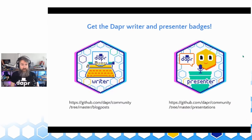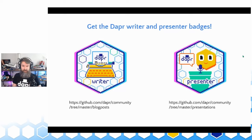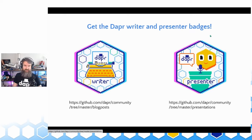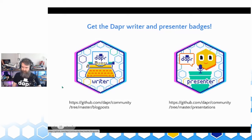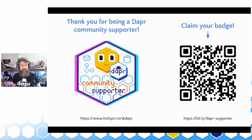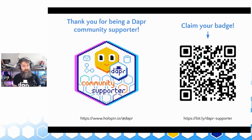If you are writing a Dapper blog post, recording Dapper-related videos, or giving sessions about Dapper, you can claim digital badges. Go to the links in the Dapper/community repository — you can add the information about your blog post or video to those documents and you'll be awarded badges. There are many more badges for contributing to source code. And there's always the Dapper Community Supporter badge — even if you're not contributing code or writing blog posts, just being here means you're interested in Dapper, so everyone is free to claim it.